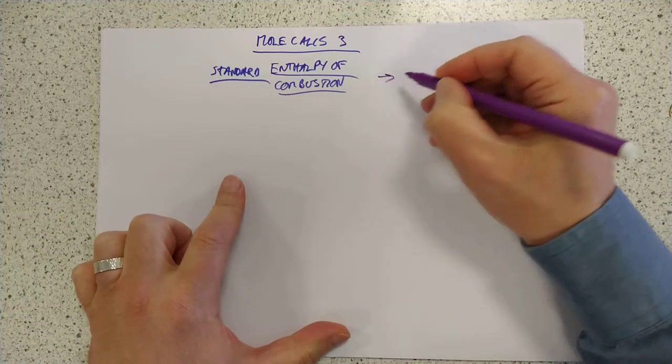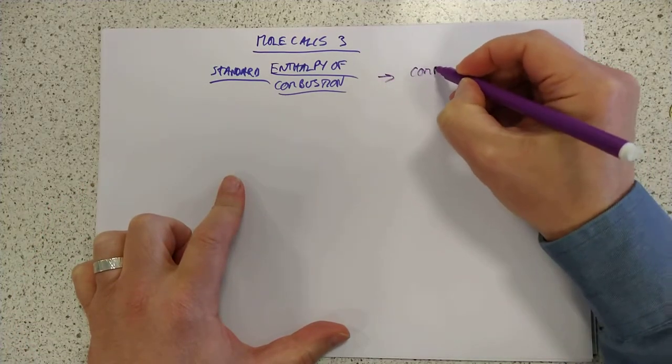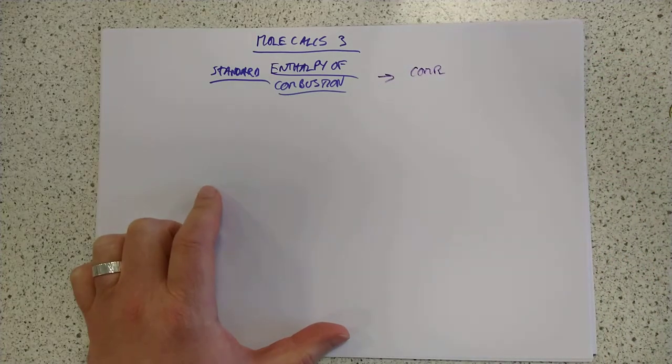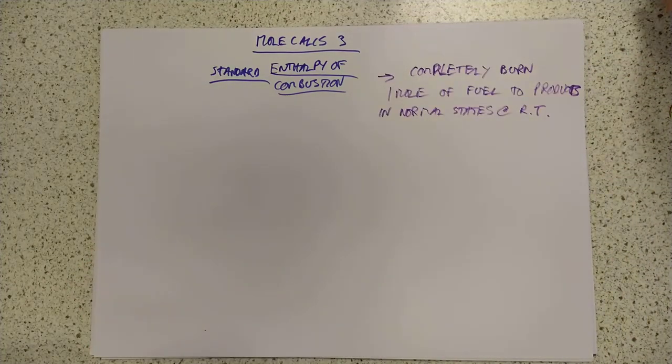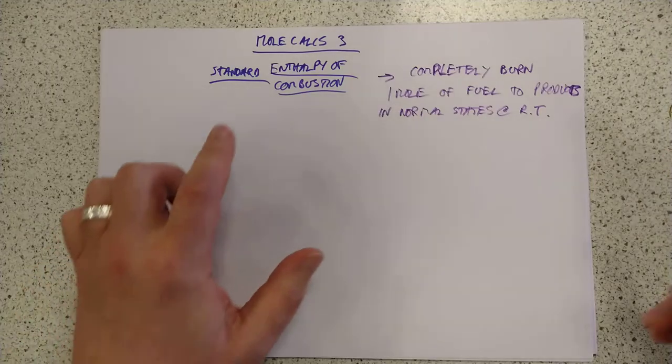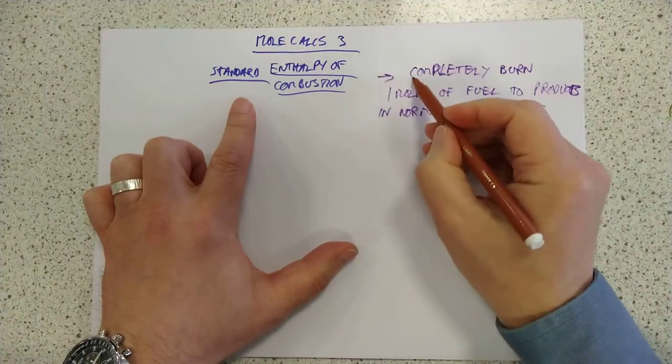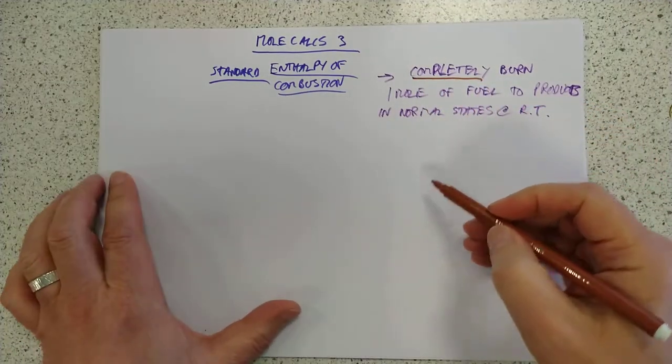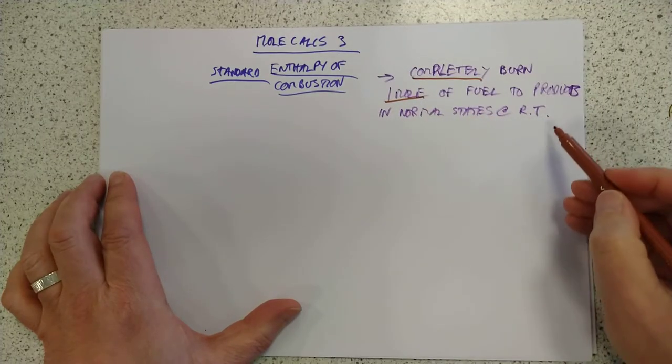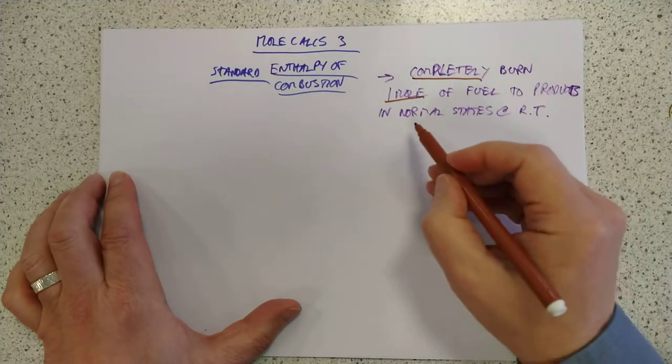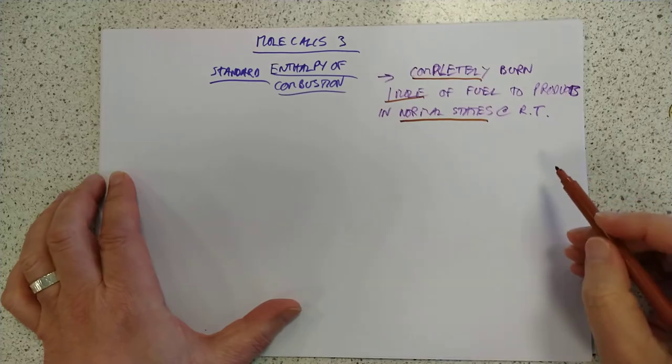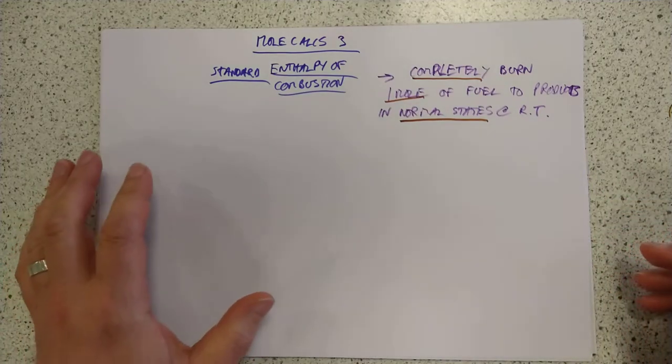It is defined as you completely... Do you know what? I'm going to pause it and write it out. Right, so there's our text definition of the standard enthalpy of combustion. When you completely burn one mole of a fuel to produce, to make the products in their normal states, room temperatures. I've underlined three areas there that will try and trick you in.